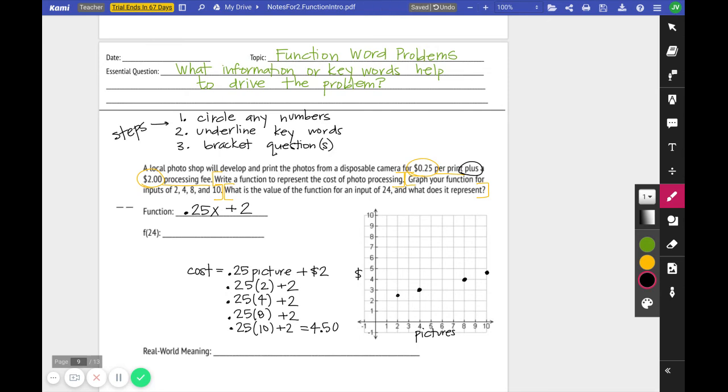What is the value for an input of 24? Okay. So f of 24. I need to do $0.25 times 24 plus $2 more. Well, $0.25 times 24 is $6 plus $2 more is $8.